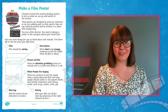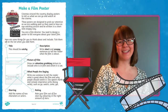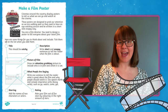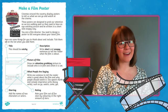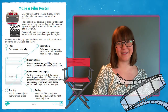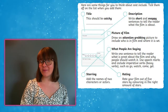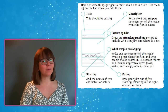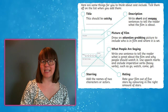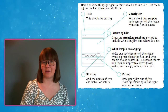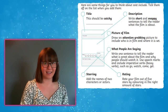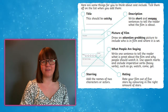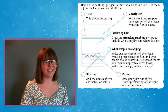Next, children get to be a film director. They can come up with their own movie ideas and then create a poster to advertise this film. At the bottom of the first page, children are given a tick list with what they may find in a good example of a movie poster — for instance, a title, a description briefly summarising the film, and a star rating too.